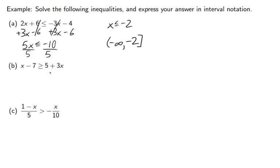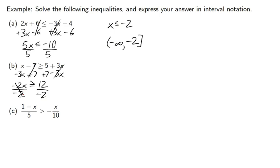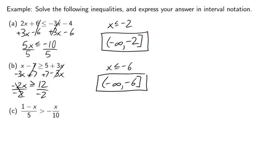Next example: subtract 3x from both sides and add 7 to both sides. We get negative 2x greater than or equal to 12. Now we divide by negative 2 on both sides — here's the important thing — I just divided by a negative number, so I have to flip my sign. 12 divided by negative 2 is negative 6. So the answer is negative infinity to negative 6 with a bracket. The general strategy: if we multiply or divide by a negative number, we flip the sign.